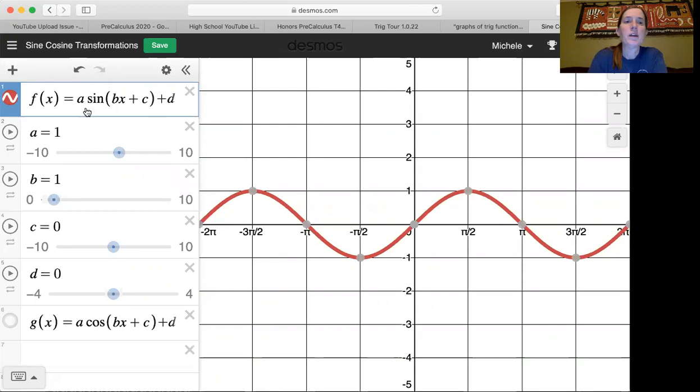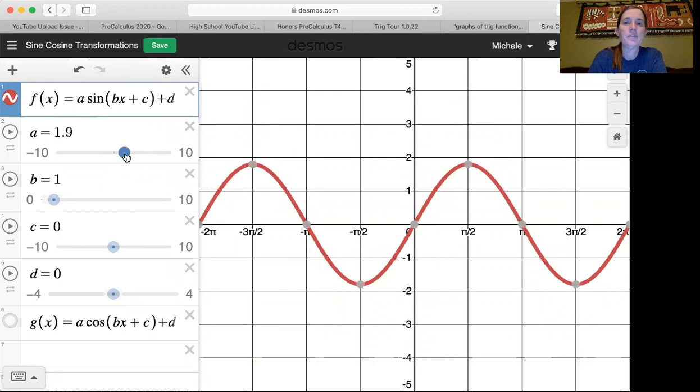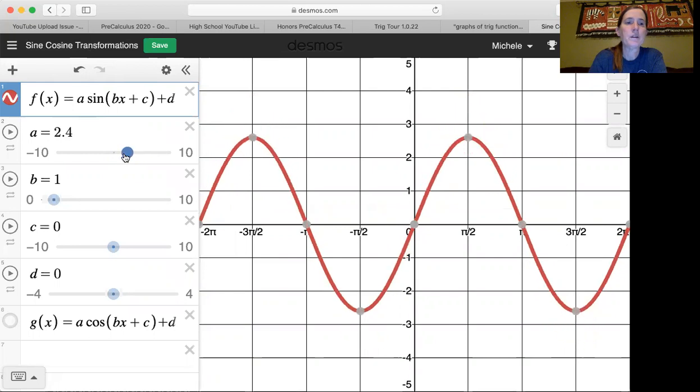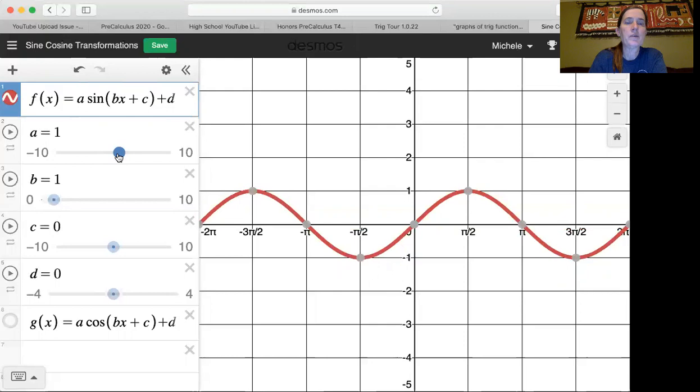And so I've got a graph f of x equals, and then a sine b x plus c plus d. So remember, a represents amplitude. And so if we drag this, we can see how amplitude changes the maximum and the minimums. Let me review that a little bit. You can play with Desmos too.